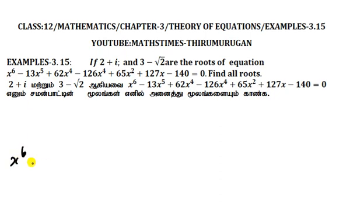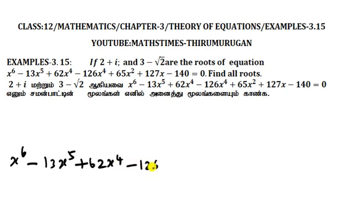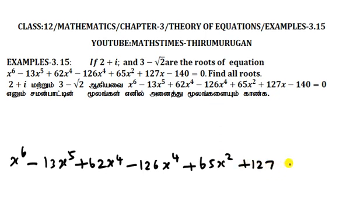x power 6 minus 13x power 5 plus 62x power 4 minus 126x power 4 plus 65x squared plus 127x minus 140, equal to zero.